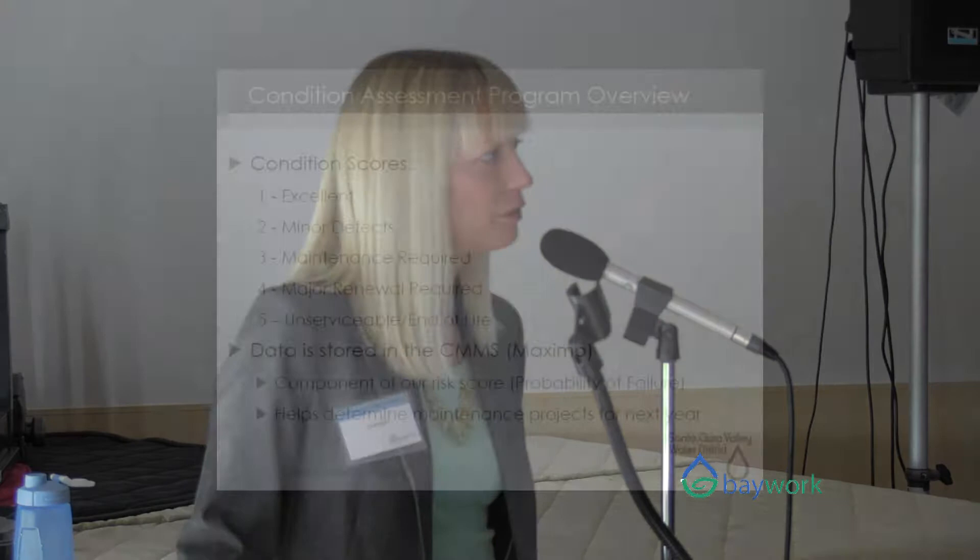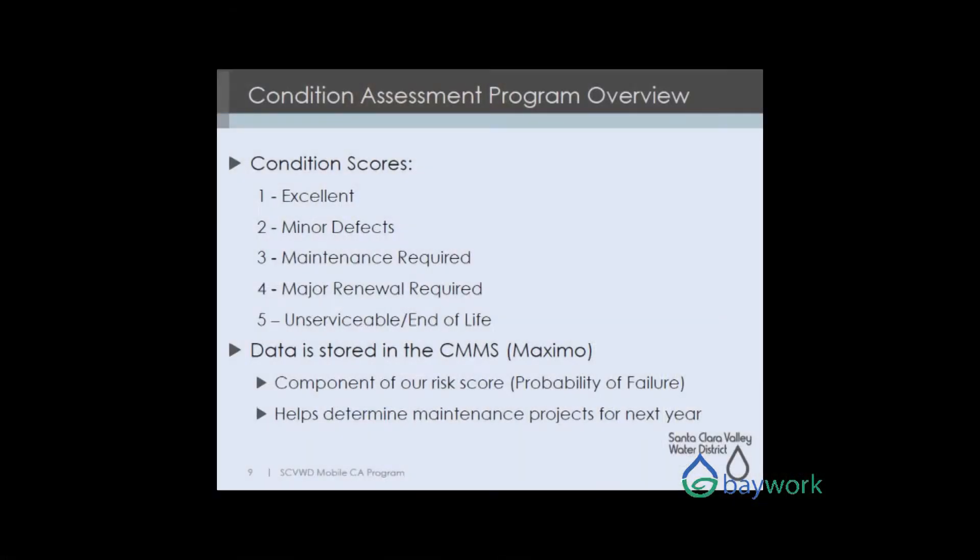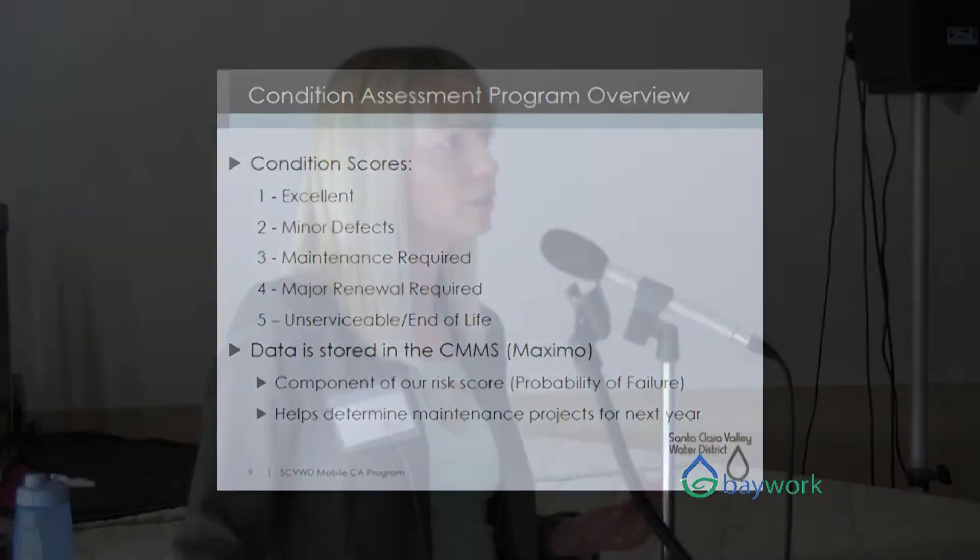As we've seen in many other presentations this morning, we use a 1 to 5 scale to rate condition of our assets, with 1 being good and 5 being end of life. On our mobile devices, to get to an overall condition score, we're looking at different parameters for different asset types. For a pump, we're looking at rust and oil, whereas for a creek, we're looking at sedimentation and vegetation. You get different forms that pop up on the mobile device to lead you to this overall condition assessment score.